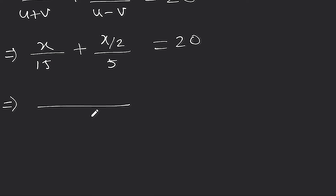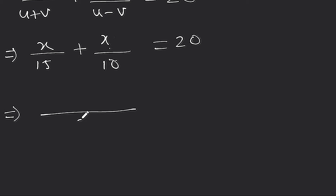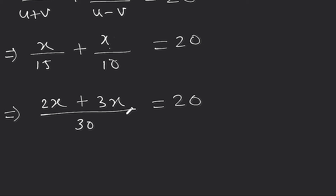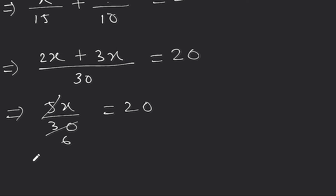Now the LCM of 5 and 15 is 15. Taking the 2 from x by 2 to the denominator gives 10. So the LCM of 15 and 10 is 30. This gives 2x upon 30 plus 3x upon 30, so 5x upon 30 equals 20. Simplifying, 5 goes into 30 six times, so x equals 20 multiplied by 6, which gives x equals 120.